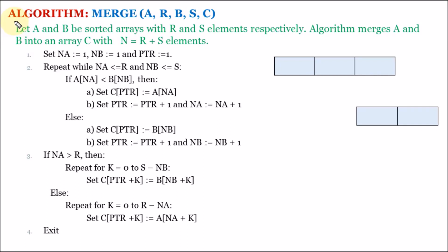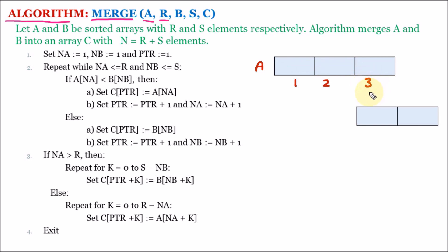Hello everyone, my name is Ankit Vama and today we are learning the algorithm for merge sort. Here we have the first array which is a. The size of array a is r. We are assuming that the array starts with index 1, so these are the index values. Here r signifies the size of the array, meaning the array size is 3.